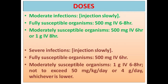For dosing: in moderate infections given by slow IV injection — for susceptible organisms 500 mg 8-hourly; for moderately susceptible organisms 500 mg IV 6-hourly or increase to 1 gram IV 8-hourly. For severe infections by slow IV: susceptible organisms 500 mg IV 6-hourly; moderately susceptible organisms 1 gram IV 6-hourly. Do not exceed 50 mg/kg body weight or 4 grams per day, whichever is lower.